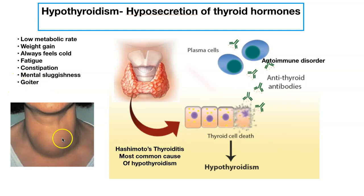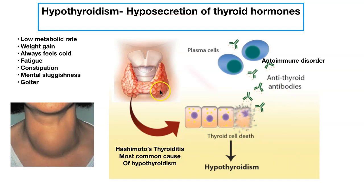A goiter is just an enlargement of the thyroid gland. There are a number of reasons you can have hypothyroidism, but the main cause is Hashimoto's thyroiditis, another autoimmune disorder. In this case, the body makes antithyroid antibodies that actually destroy the thyroid cells, so the thyroid gland cannot make its T3 and T4 — resulting in hyposecretion and hypothyroidism. That has to be treated too.